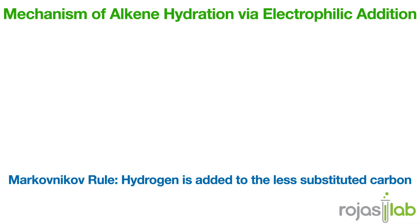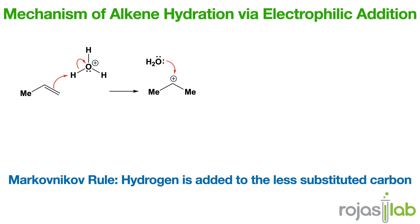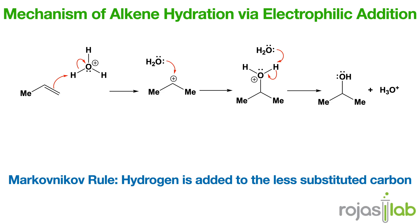Now let's talk about the opposite reaction: hydration of alkenes via electrophilic addition. This reaction results in the addition of water across a double bond. Typically it's acid-catalyzed and results in Markovnikov addition. In the first step, protonation of the alkene forms a carbocation. Next, water attacks, forming an oxonium ion. Finally, we deprotonate that oxonium ion to give the alcohol product. This reaction follows the Markovnikov rule and is reversible with dehydration. The Markovnikov rule states that hydrogen will be added to the carbon that already has the most hydrogens.